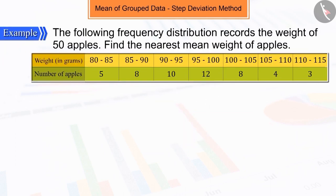The following frequency distribution records the weight of 50 apples. So, can you find the nearest mean weight of these apples?